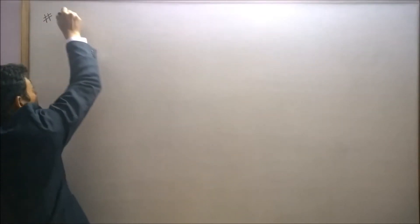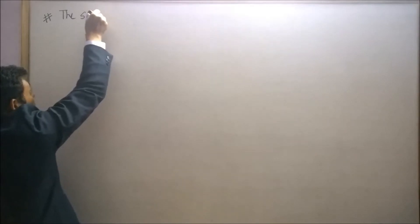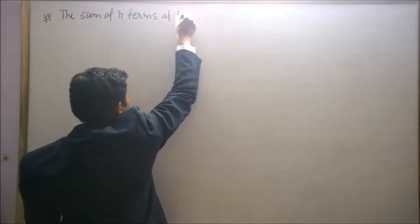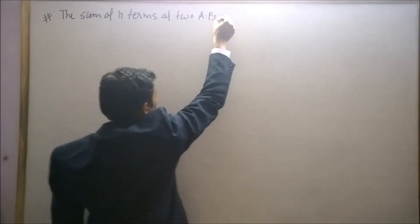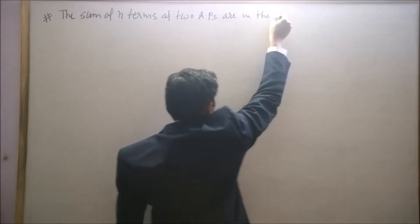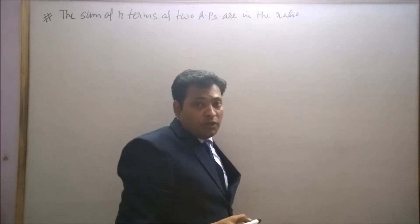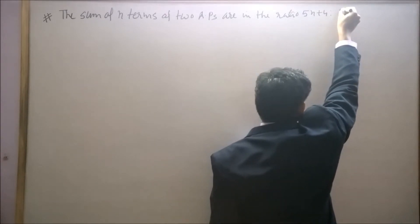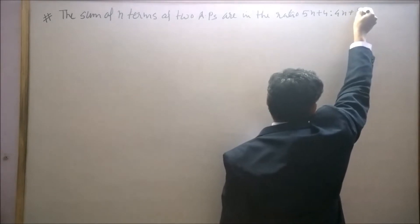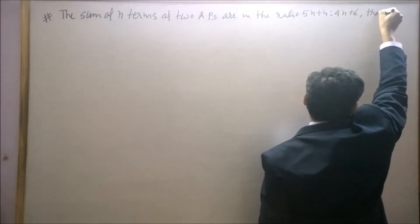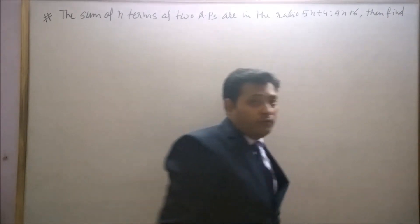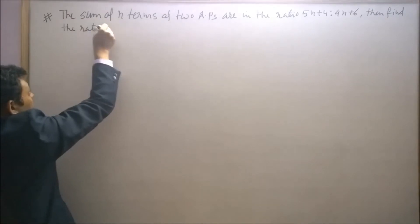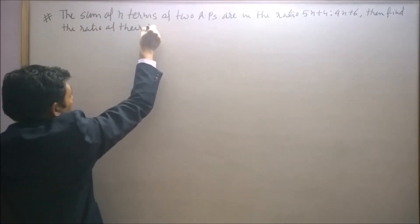Question says: the sum of n terms of two APs are in the ratio 5n plus 4 is to 9n plus 6. Then find the ratio of their 18th term.